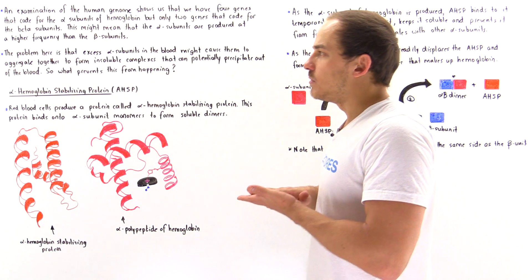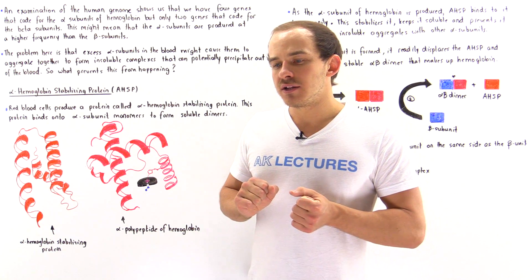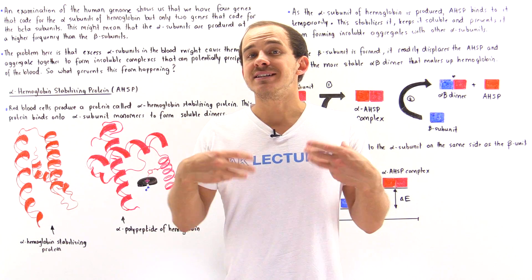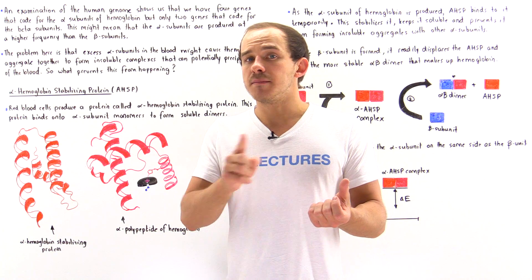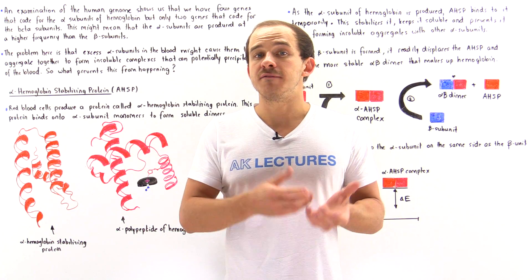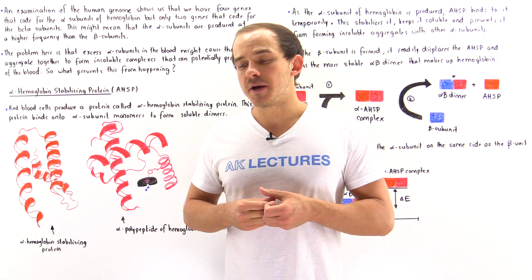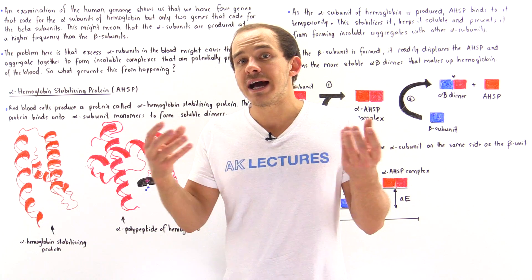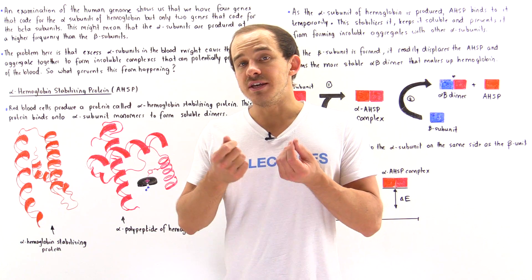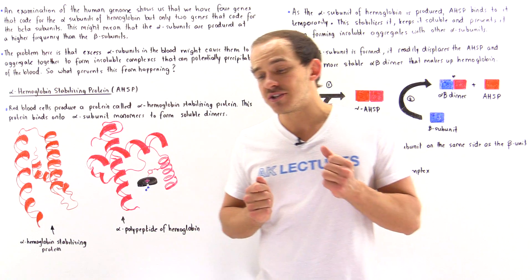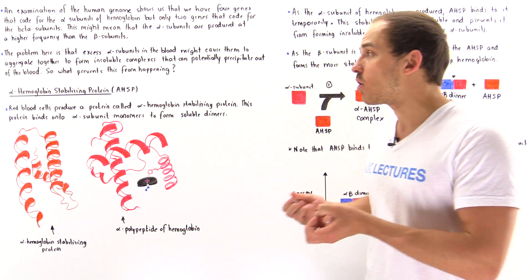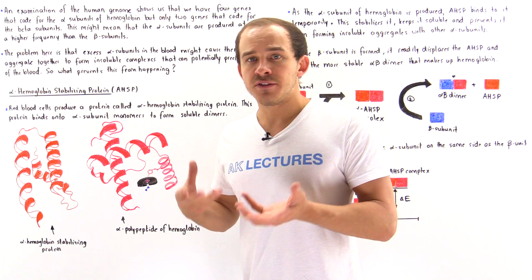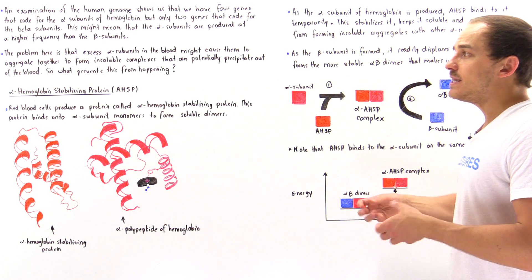Why is that a problem within our red blood cells? Because inside any hemoglobin molecule, we have a one-to-one combination between the alpha and beta subunits. When all the beta subunits are used up, we're going to have an excess amount of alpha subunits left over inside our blood plasma. These alpha subunits can form aggregates by binding to one another, and these complexes will become insoluble — they will precipitate out of the blood plasma, causing many different types of problems. So what does our body do to prevent the aggregation and precipitation of these alpha complexes?